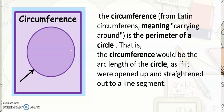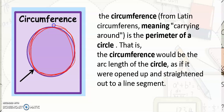Next would be the circumference. From the Latin word meaning 'carrying around,' it is the perimeter of a circle. When we say perimeter, it is the length of the totality of the shape. So this is the circumference — the length of the edge if you stretch it out to form a line. The circumference would be the arc length of the circle as if it were opened up and straightened out to a line segment.